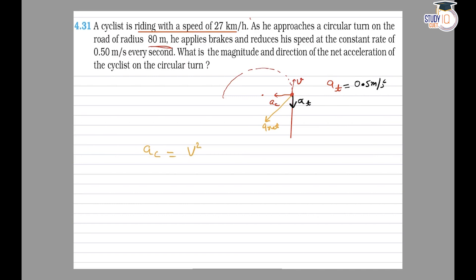The value of centripetal acceleration ac at the given instant is equal to v squared by r. Here, v is equal to 27 kilometers per hour, which can be written as 7.5 meters per second. So radial acceleration ac equals v squared by r, which is 7.5 squared divided by 80 meters, giving approximately 0.7 meters per second squared.